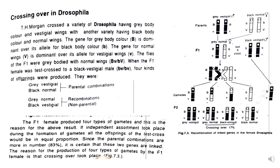The recombinants Morgan obtained were only 17%, confirming that these genes are linked and the small number of recombinations is due to crossing over. This is called a two-factor cross because only two genes are involved. When the F1 male was test crossed to a black vestigial female, only parental combinations appeared in equal proportion and no new combinations arose. This is due to the absence of crossing over during gamete formation in males — discovered by Bridges and Darlington. Studies of females of silkworm Bombyx mori also showed that crossing over is absent in them.